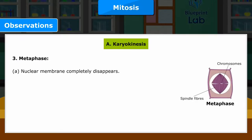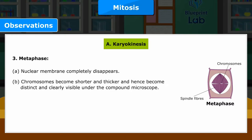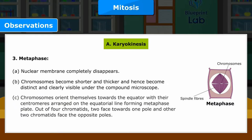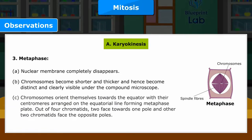3. Metaphase: A. Nuclear membrane completely disappears. B. Chromosomes become shorter and thicker and hence become distinct and clearly visible under the compound microscope. C. Chromosomes orient themselves towards the equator with their centromeres arranged on the equatorial line forming the metaphase plate. Out of four chromatids, two face towards one pole and the other two chromatids face the opposite poles.